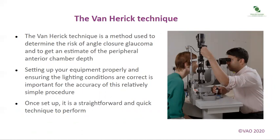The Van Herrick technique is a method used to determine the risk of angle closure glaucoma and to get an estimate of the peripheral anterior chamber depth. Setting up your equipment properly and ensuring the lighting conditions are correct is important for the accuracy of this relatively simple procedure. Once set up, it is a straightforward and quick technique to perform.